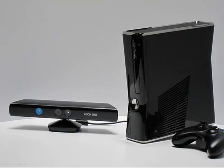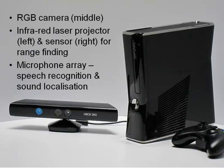The Xbox Kinect sensor has multiple sensors: an RGB camera, an infrared laser projector, and a range-finding sensor. This allows it to build up a 3D depth image of what's in front of it — picking out and identifying people moving in front of it with much better accuracy than a simple camera. It also has a microphone array for speech recognition and sound localization. The Kinect broke records as one of the fastest-selling high-tech gadgets of all time in the UK.